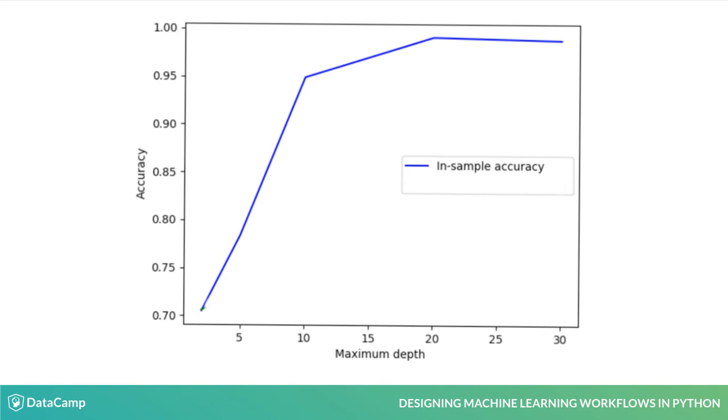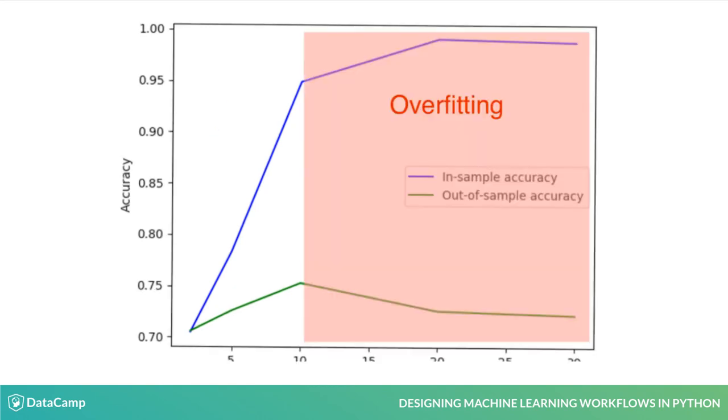Performance using cross-validation, also known as out-of-sample accuracy, is much lower than in-sample performance and a much more realistic estimate of future performance. The most important observation is that out-of-sample performance actually drops for depths greater than 10 due to overfitting.